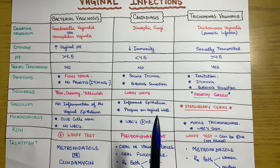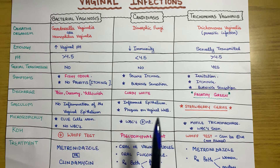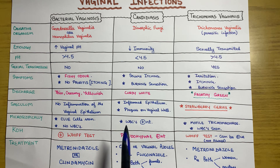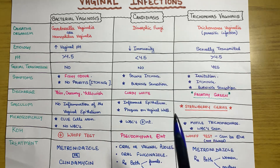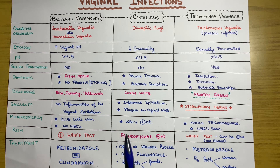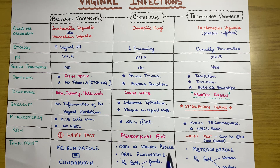On speculum examination, inflamed epithelium can be seen lining the vagina, and plaques may also be present on the vaginal wall. Microscopically, white blood cells are present in candidiasis infection. On KOH examination, pseudohyphae are present — fungal colonies form these hyphae-like structures, which is characteristic of candidiasis.